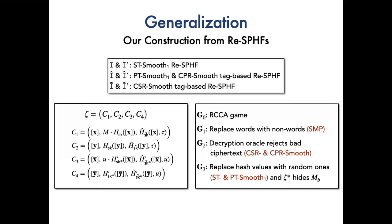In game 3, by the ST and PT smooth one, we replace all the hash values in challenge ciphertext with random ones. Now, the zeta star perfectly hides M_B, and the RCCA security of our construction holds.